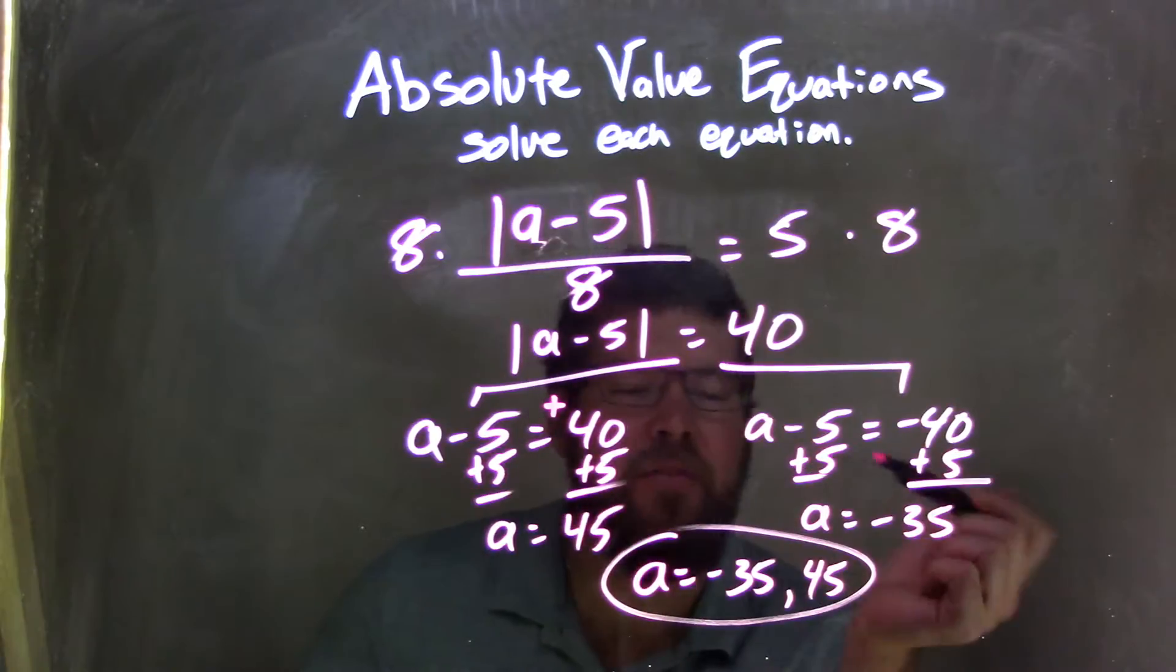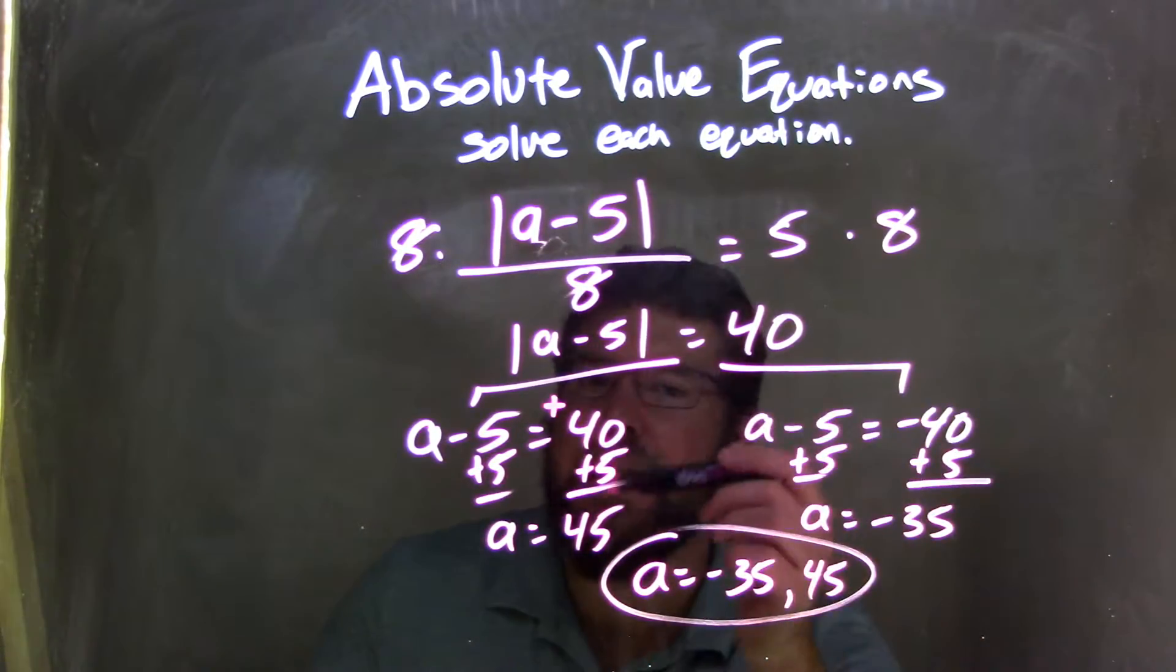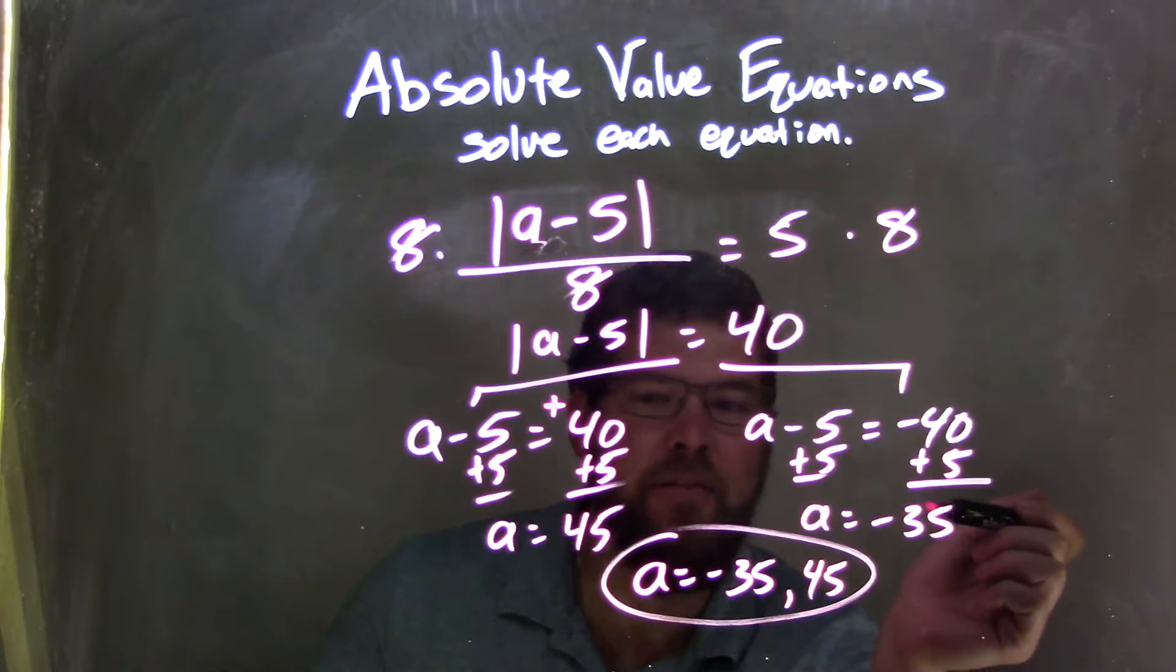From there, I solved each equation individually. I added 5 to both sides of both equations, leaving me with a equals positive 45 here, and a equals negative 35.